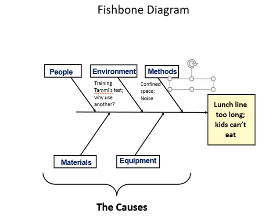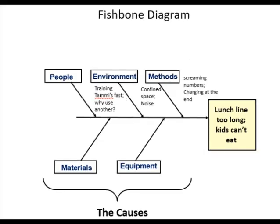Another issue can be environment. Sometimes the spaces are so tight for the checkout area in the cafeteria that the lines get intertwined and people are on top of each other, making it hard to get order so people can get through. Another environmental issue can be the noise inherent to school cafeterias — if the person running the lunch line can't communicate with people in line, it makes the whole process take that much longer.